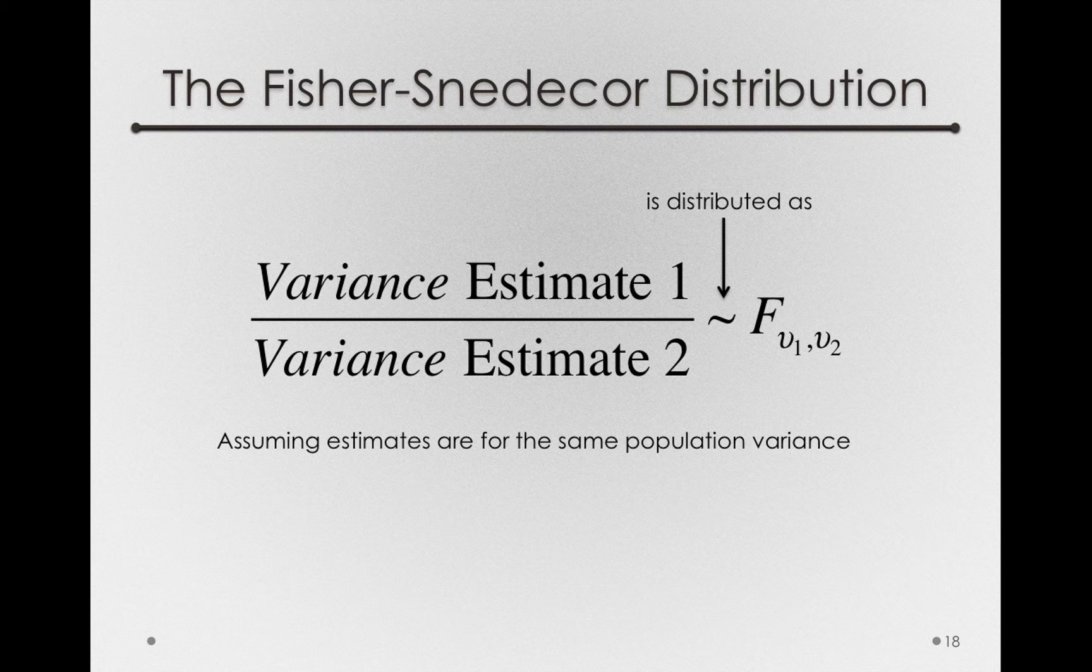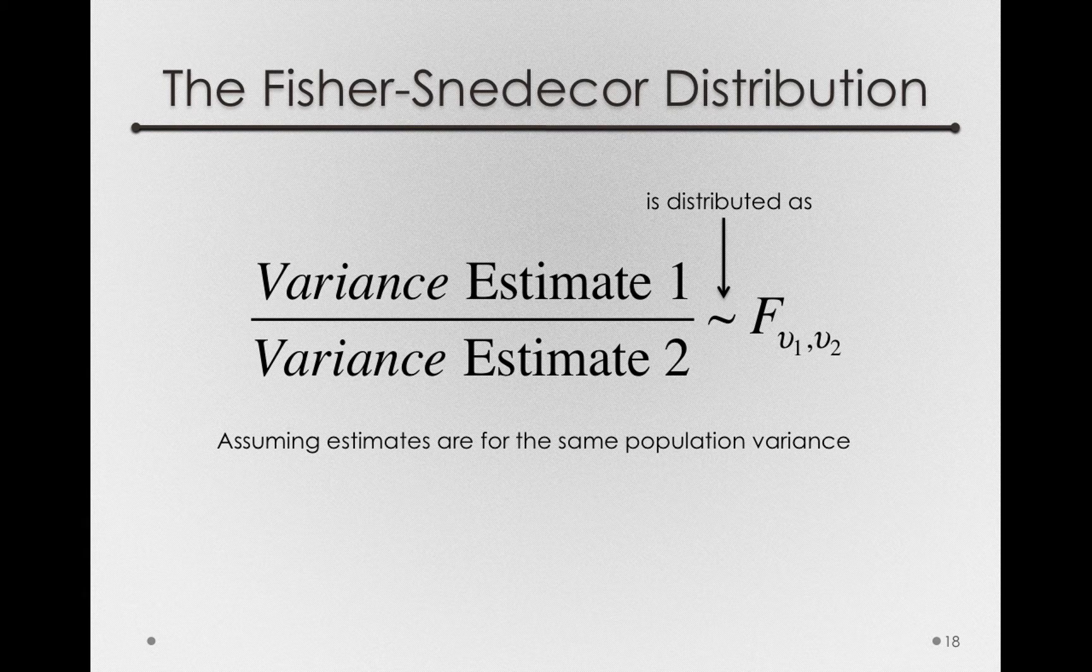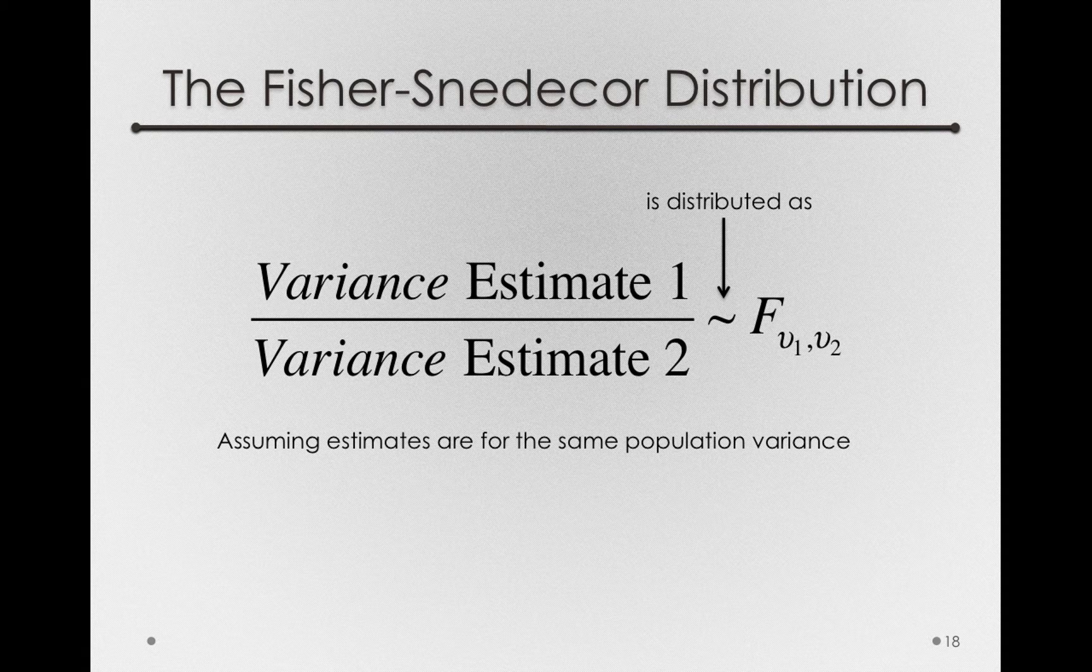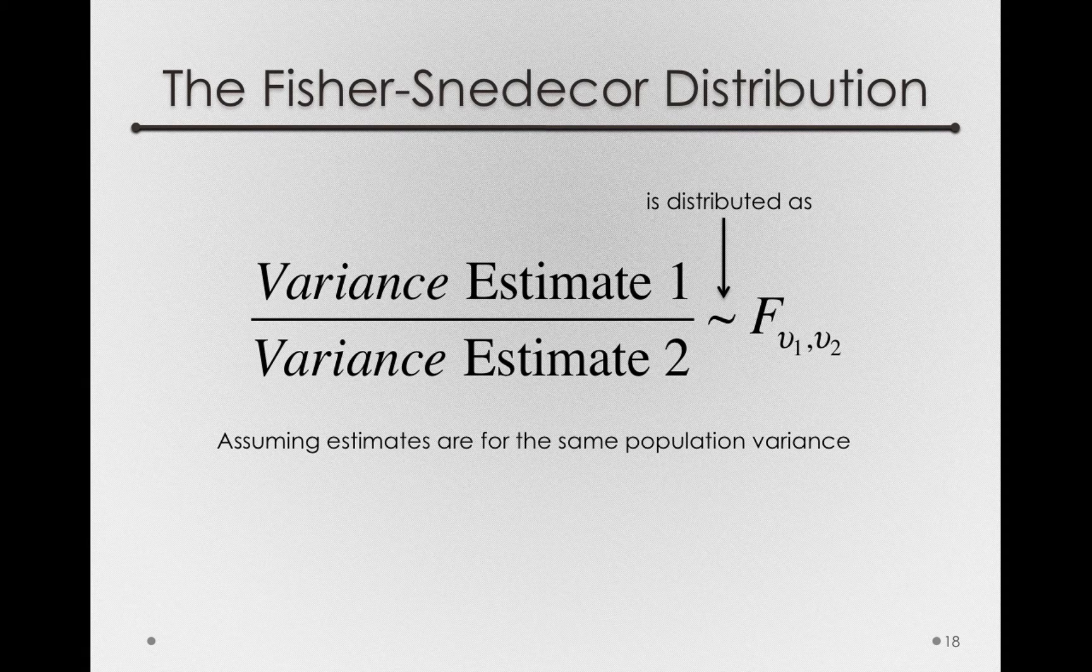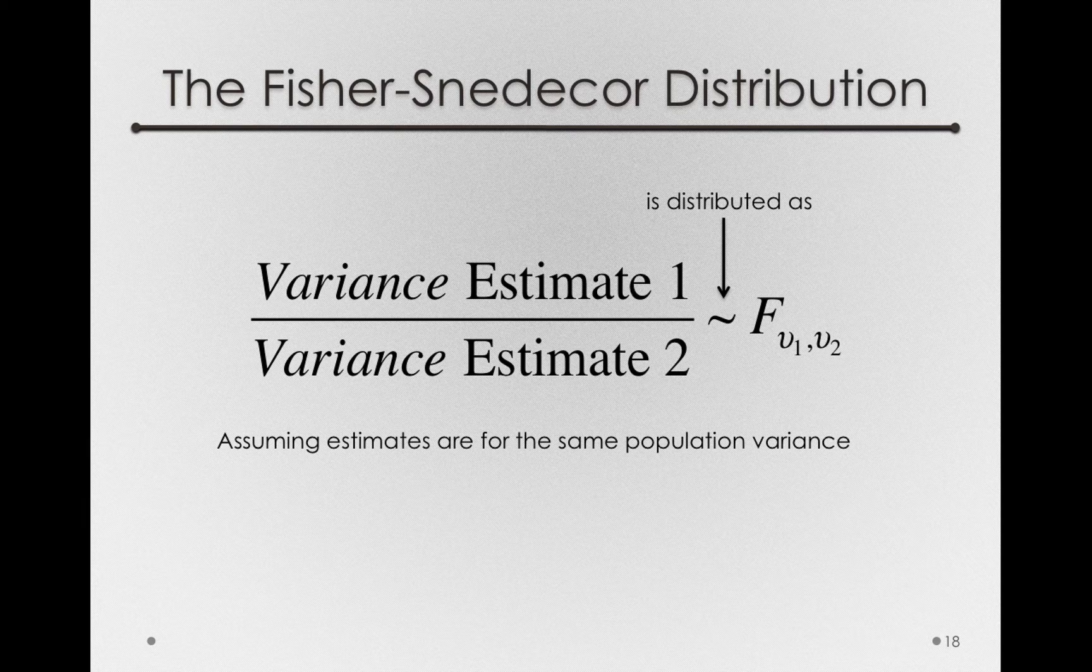We don't have to have the same number of people in our numerator and denominator estimates. That doesn't really matter. It'll change the shape of the Fischer-Snedecor, but all of those different distributions will all be F distributions.